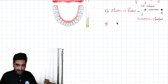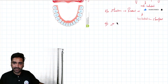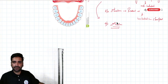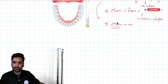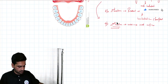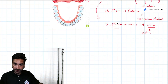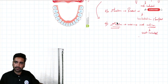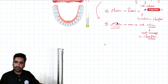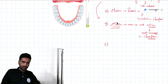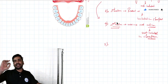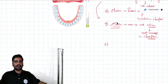Rule number four is the same as rules two and three but applied to second molars: if the second molar is missing and not replaced, then it is not included in the classification.